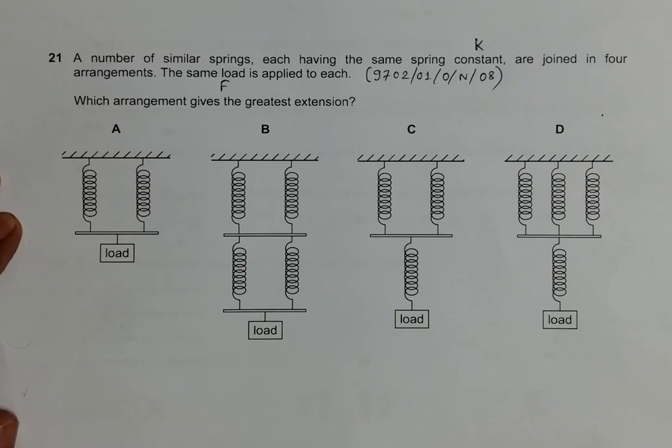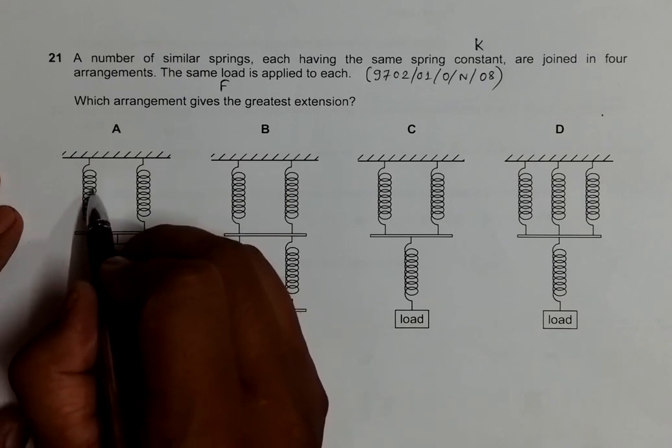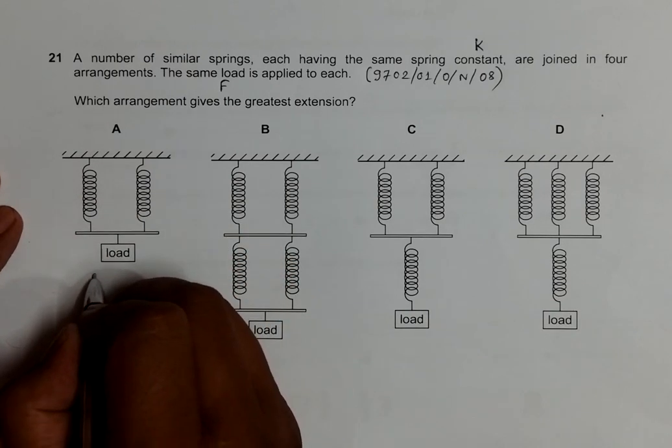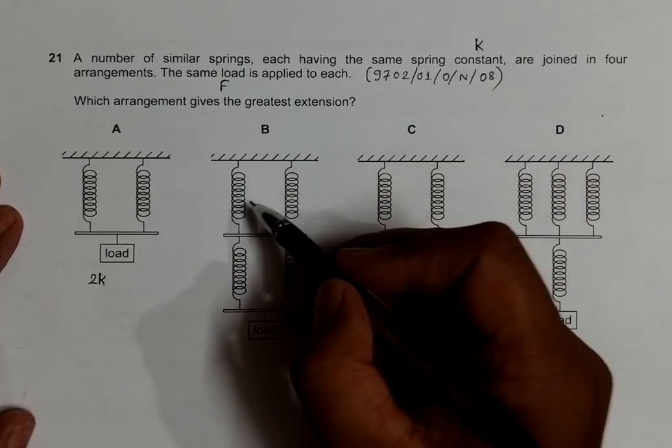Let's start with arrangement A. Its spring constant is K and K, so the total spring constant is 2K.